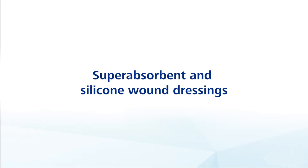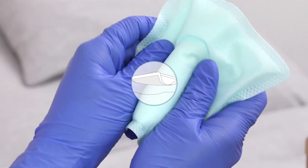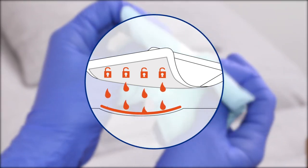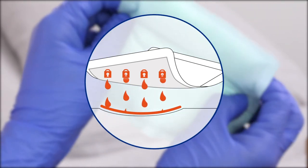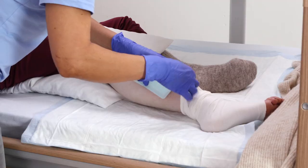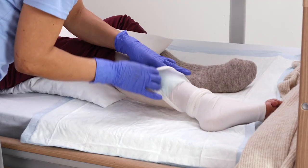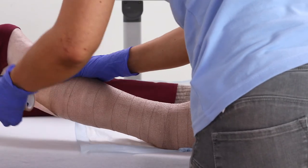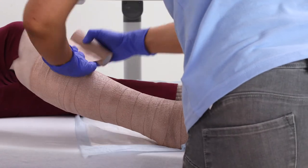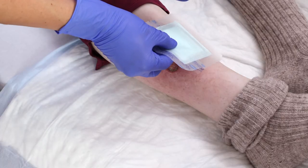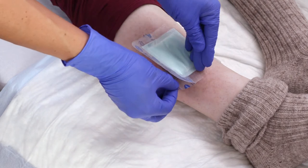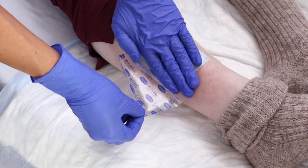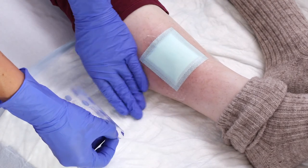Superabsorbent and silicone wound dressings. These products are highly absorbent, safely trapping the absorbed wound exudate and preventing leakage, even when used under a compression bandage. Thanks to the silicone coating, the pad does not stick to the wound. It only adheres softly to the skin and can be gently removed.